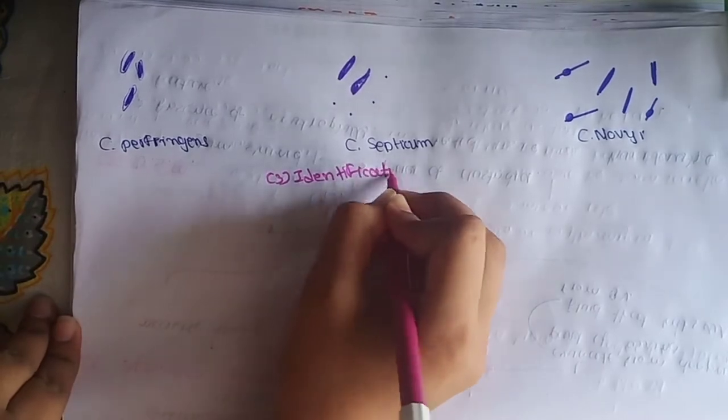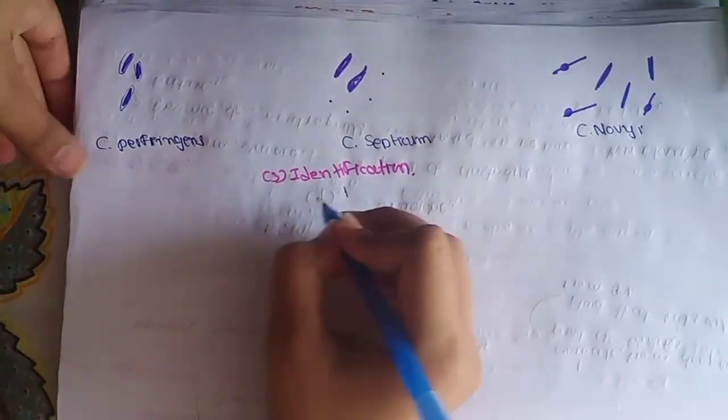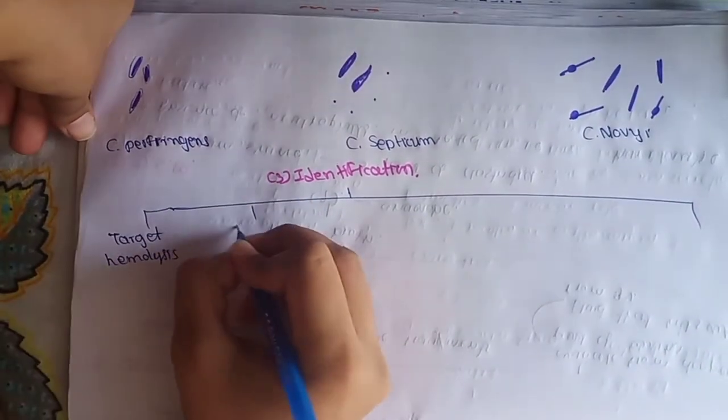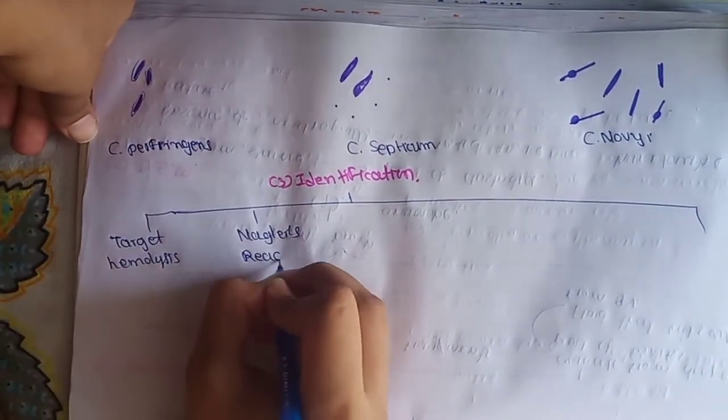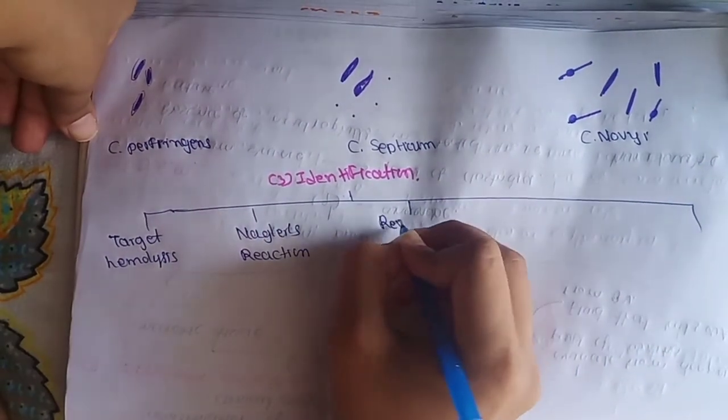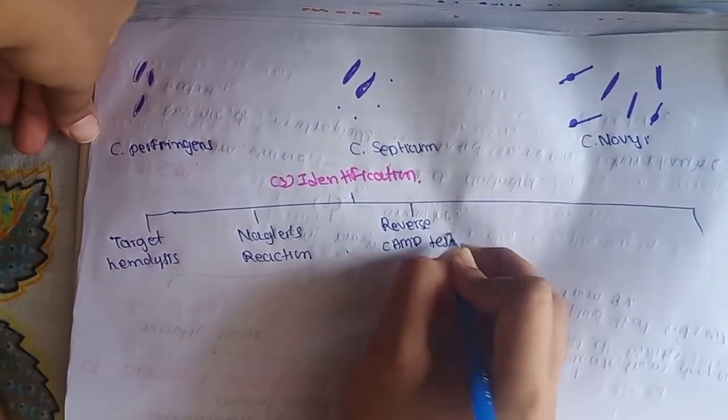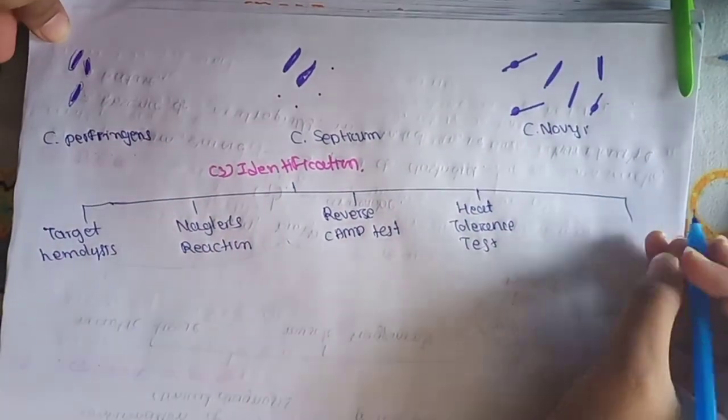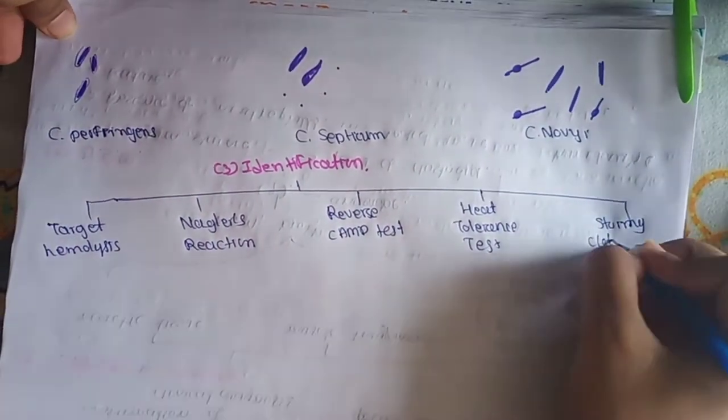The third method is biochemical test for identification. In Clostridium perfringens, we are mainly doing these five tests: First is target hemolysis, second is Nagler reaction, third is reverse CAMP test, fourth is heat tolerance test, and fifth is stormy clot reaction test.